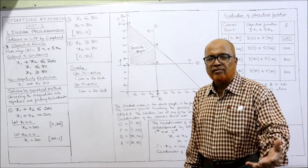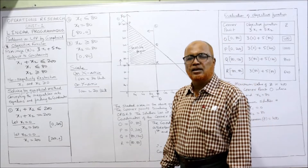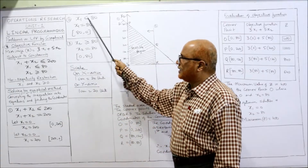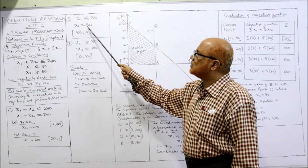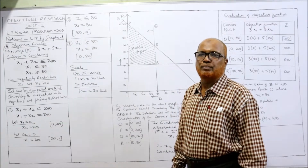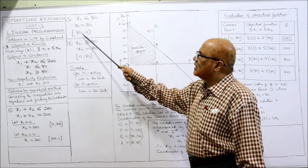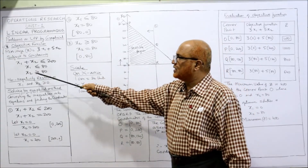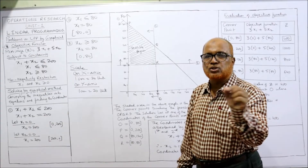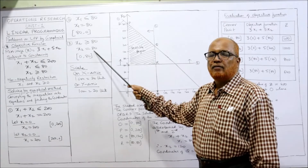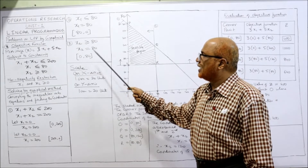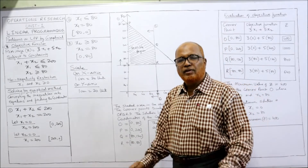The second equation: x1 less than or equal to 80, we make it x1 equals 80. We don't have x2, so x2 will be 0 — coordinates (80, 0). Third constraint: x2 greater than or equal to 80, we make it x2 equals 80. When only x2 is given, x1 will be 0 — coordinates (0, 80). We have now calculated the coordinates of all the constraints.